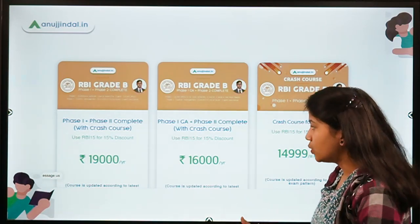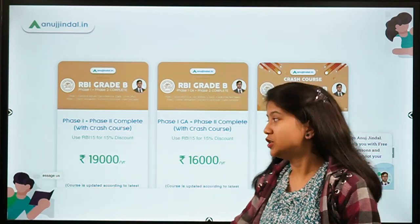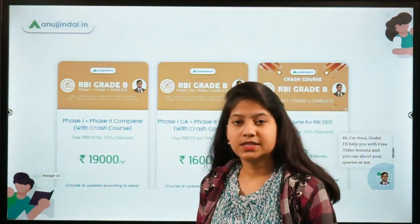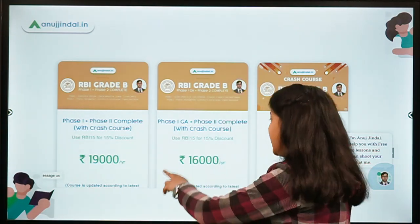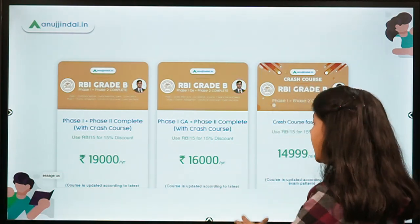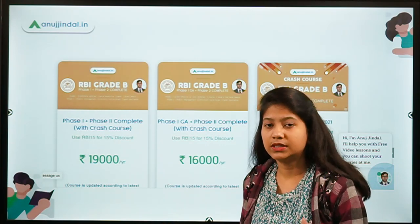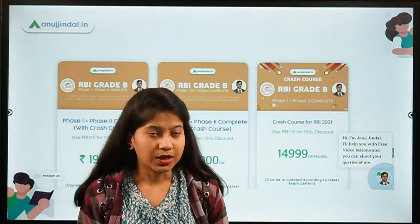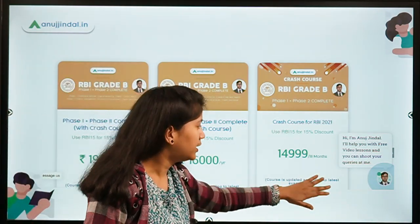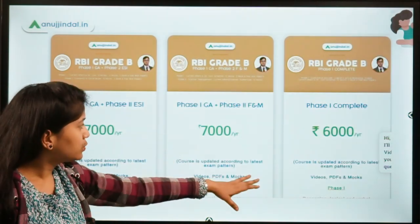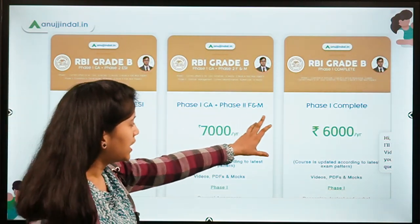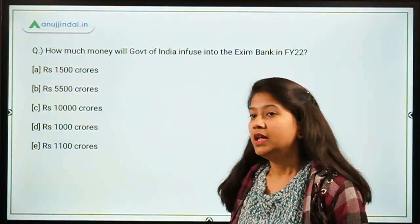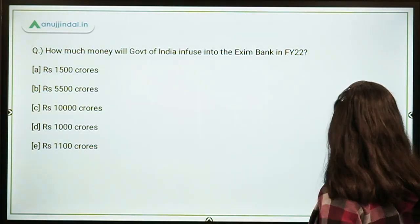These are our courses. If you are preparing for the RBI Grade B examination, we have the full-fledged Phase 1 plus Phase 2 complete course at ₹19,000 with a 15% discount. The Phase 1 plus Phase 2 course is ₹16,000, coming to around ₹13,000 after the discount. We also have a crash course with a 40% discount, and individual courses for Phase 2 ESI, Finance and Management, and Phase 1 complete.